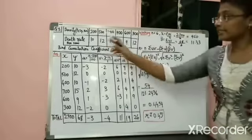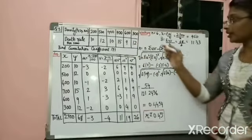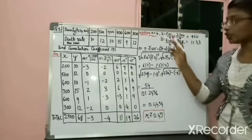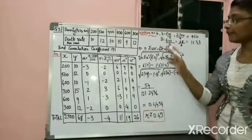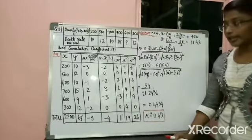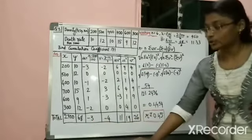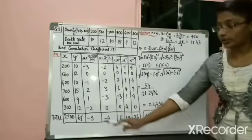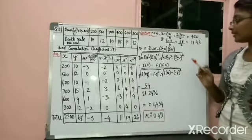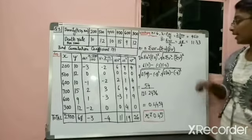Data for 6 cities has been given: 1, 2, 3, 4, 5, 6. So n = 6. Then you have to find out x̄ and ȳ using the formula x̄ = Σxi / n and ȳ = Σyi / n. By adding the x and y columns you get Σxi = 2700 and Σyi = 68. Dividing by 6 you get mean x̄ = 450 and mean ȳ = 11.3.